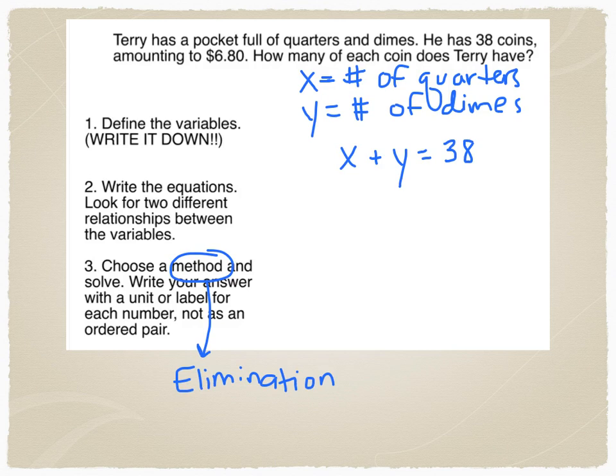Now they don't tell us this, but we already know that a quarter is worth 25 cents and a dime is worth 10 cents. And we know that we have a total of $6.80 in Terry's pocket. So we can write an equation that represents the value of our two variables. The value of the number of quarters I have is 25 cents times the number of quarters. And the value of the dimes I have is 10 cents times the number of dimes. And so there you go. I now have my two equations.